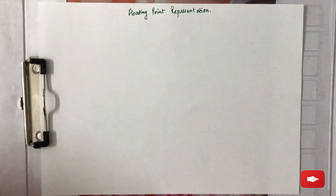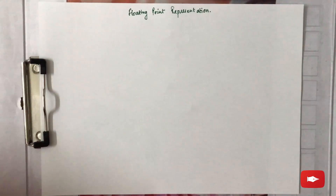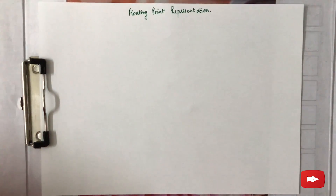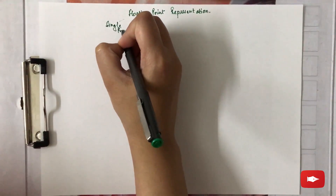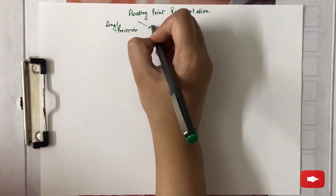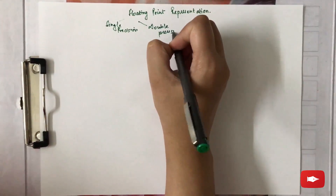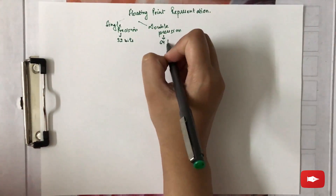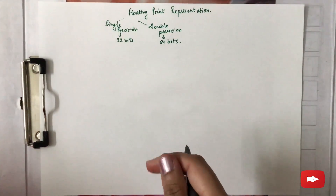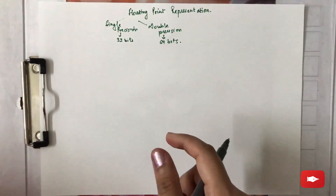The topic for this video is floating point representation. The standards for representing floating point numbers are 32 bits and 64 bits, which have been developed by IEEE. Based on the total number of bits, floating point numbers are either single precision or double precision. Single precision is for 32 bits whereas double precision is for 64 bits. There is a certain format for both, which we will see now.